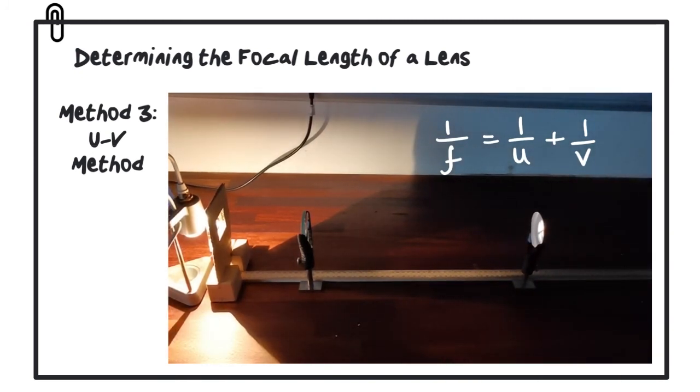When we're getting the clear image, light is leaving the object, passing through the lens, and being refracted towards the screen, forming a clear, sharp image.